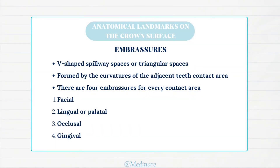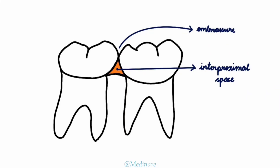Embrasures. Embrasures are V-shaped spillway spaces or triangular spaces formed by the curvatures of adjacent teeth at the contact area. There are four embrasures for every contact area: facial, lingual or palatal, occlusal, and gingival. The main difference between interproximal spaces and embrasures is that interproximal spaces are filled with interdental gingiva, whereas embrasures are empty spaces adjacent to the teeth. Embrasures form spillways between the teeth to direct food away from the gingiva and provide a mechanism for teeth to be self-cleansing, protecting the gingiva from undue frictional trauma.